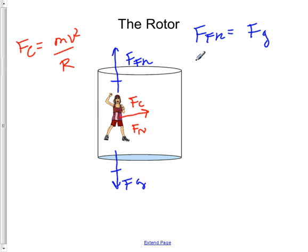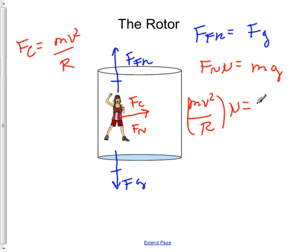Okay, so we will now plug that into this equation here. Force of friction, of course, is always force normal mu. That'll equal m times g. Force normal, we will sub in mv squared divided by r. And we'll multiply that by mu equals mg.